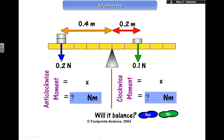0.4, 0.2, 0.2, 0.1. So this one, force times distance, gives me 0.08, because it's 0.4 times 0.2. This one, force times distance, force times distance from the pivot, gives me 0.02.